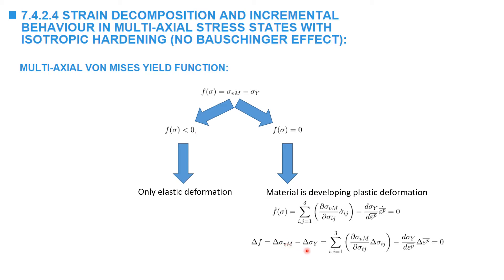The consistency condition states that the rate of f, or delta f, associated with the change in stress equals 0: delta sigma von Mises minus delta sigma y equals 0. Delta sigma von Mises is calculated by taking the partial derivative of sigma von Mises with respect to all stress components, multiplied by the corresponding change in stress components. Delta sigma y equals the slope d(sigma y)/d(equivalent plastic strain) multiplied by the change in equivalent plastic strain. This equation is used to calculate the equivalent plastic strain when a stress increment is applied.